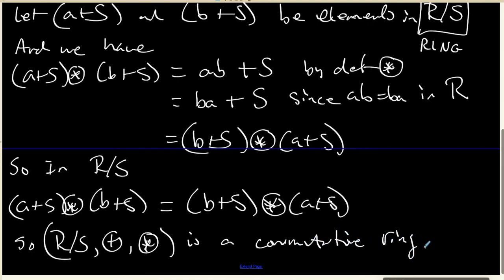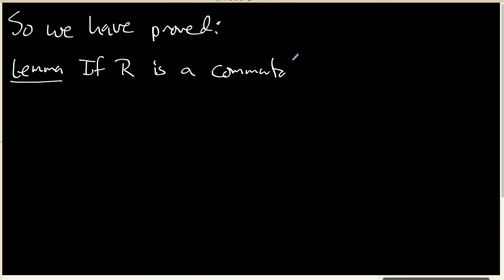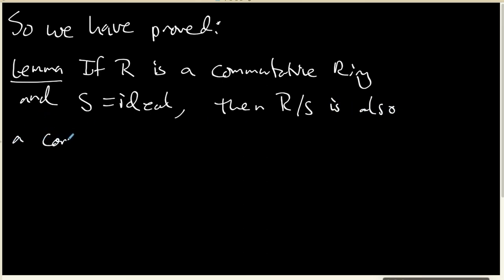So what we have done is we have proved the following lemma. If R is a commutative ring and S is any ideal inside that ring, then R mod S is also a commutative ring.